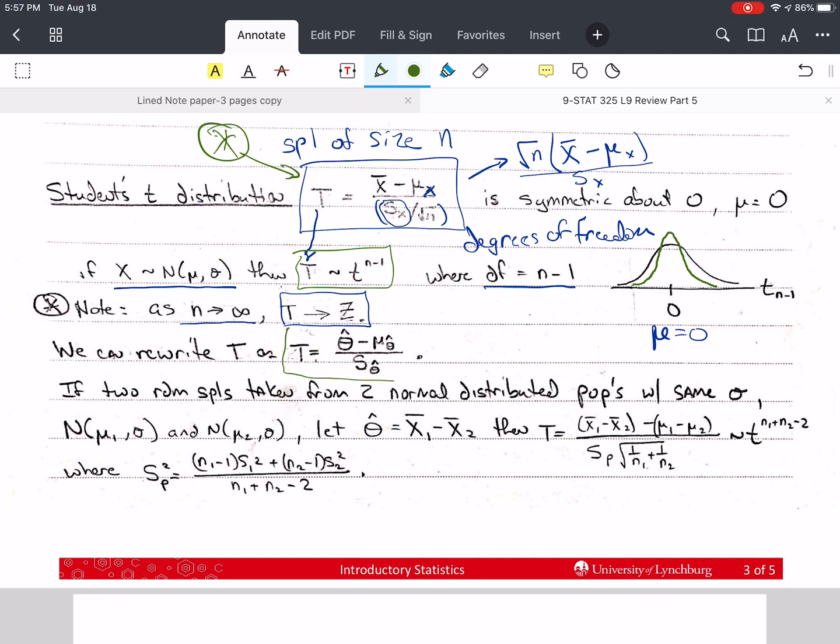Now, this is another thing that you should write down on your formula sheet. This is a general form. In other words, if we have theta hat, some estimate of the mean of a distribution, then we subtract off the mean of this sample statistic and divide by its standard deviation, then it too has a t distribution with n minus 1 degrees of freedom.